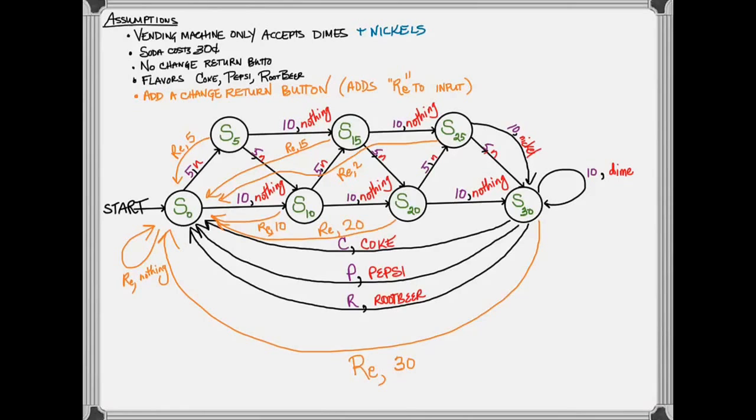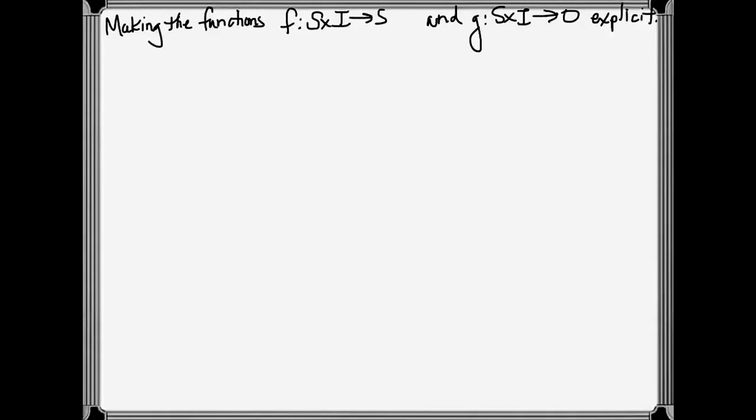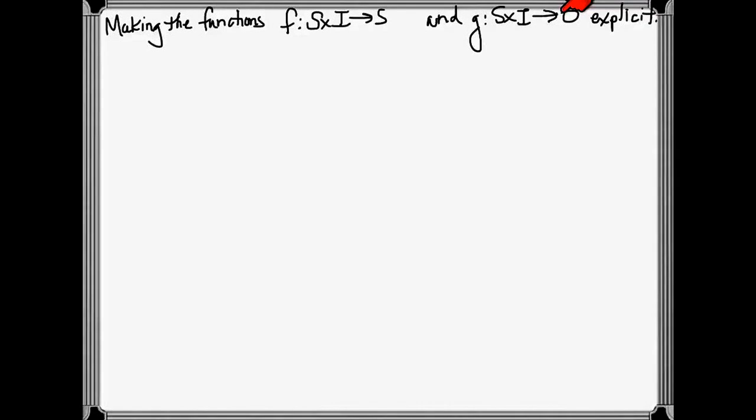We've very explicitly written out what our sets are, but we haven't really talked about our functions, our transition function and our output function. The transition function takes a pair - a state and an input - and returns the state that it transitions to. The output function takes the same pair and tells us what the output is going to be explicitly.